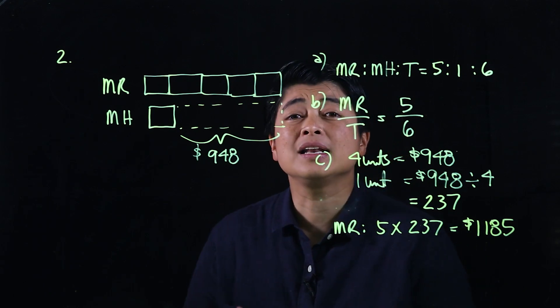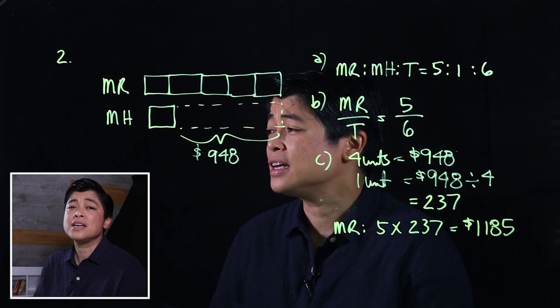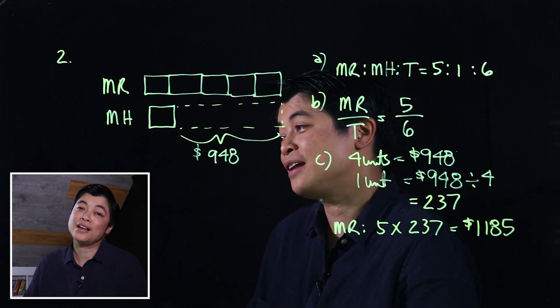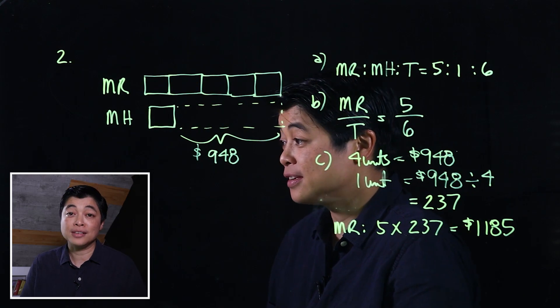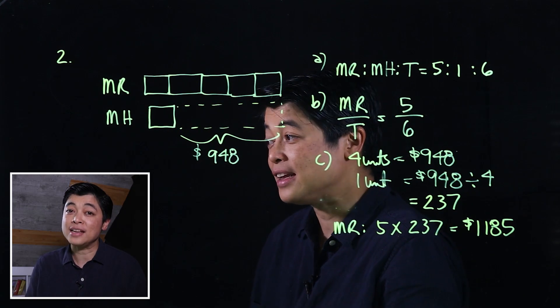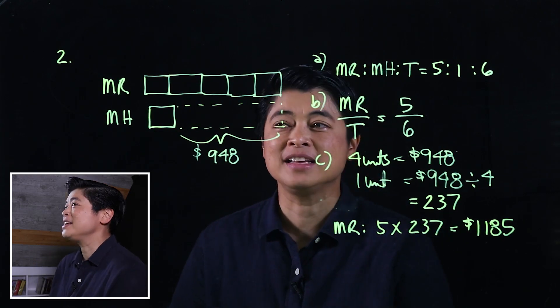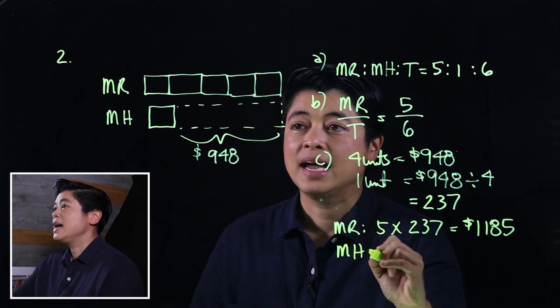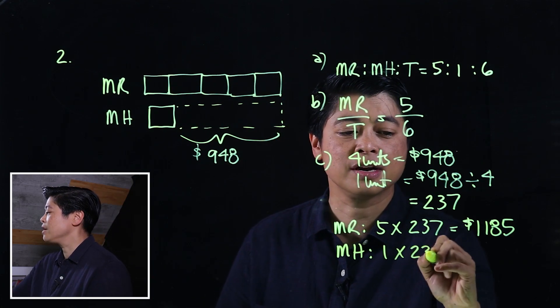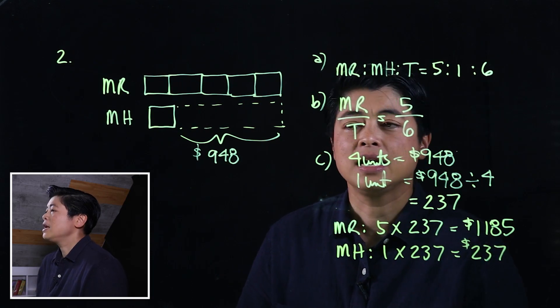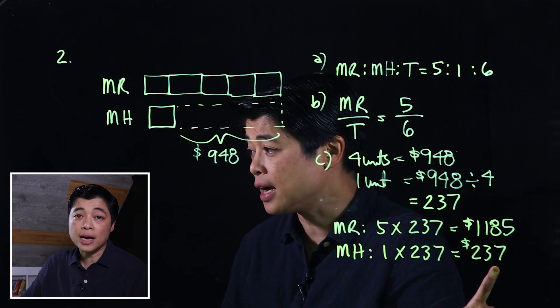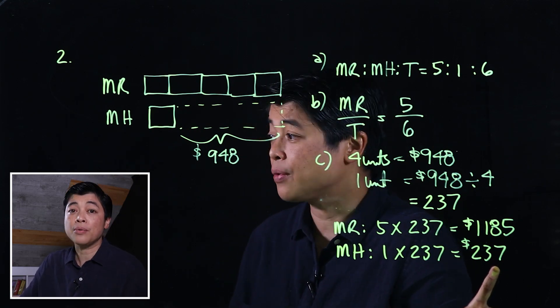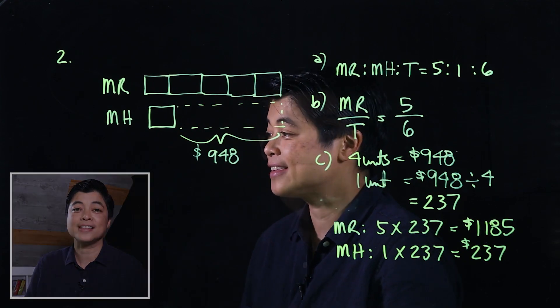The kids are allowed to use calculators; however, for this particular problem there's no calculator picture, so they have to compute manually — don't allow the kids to take the easy way out. Mr. Hamid has one unit, so one times two hundred and thirty-seven is two hundred and thirty-seven. To check, take Mr. Raja's amount minus Mr. Hamid's amount — that's not required, you're just checking — and it should give nine hundred and forty-eight.